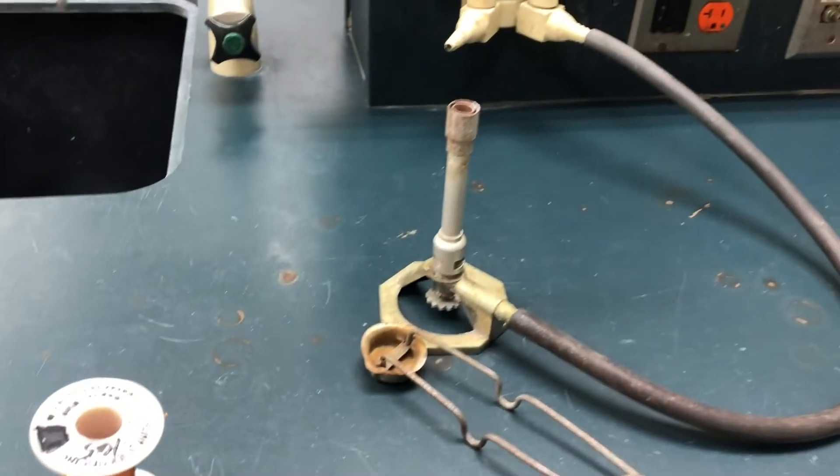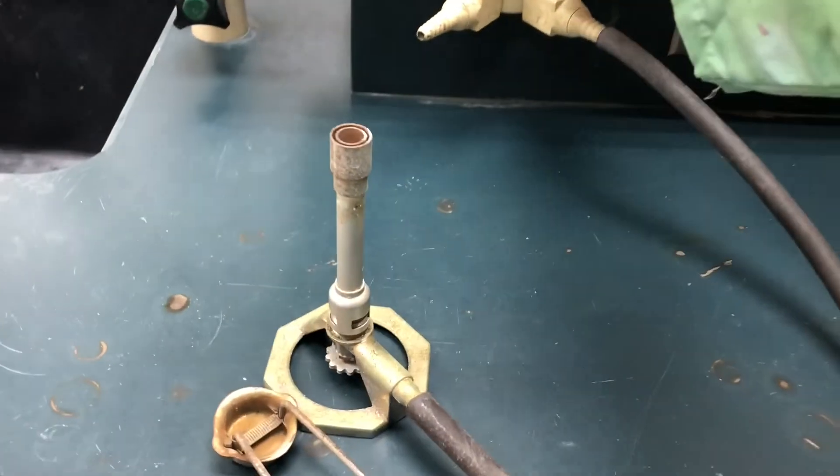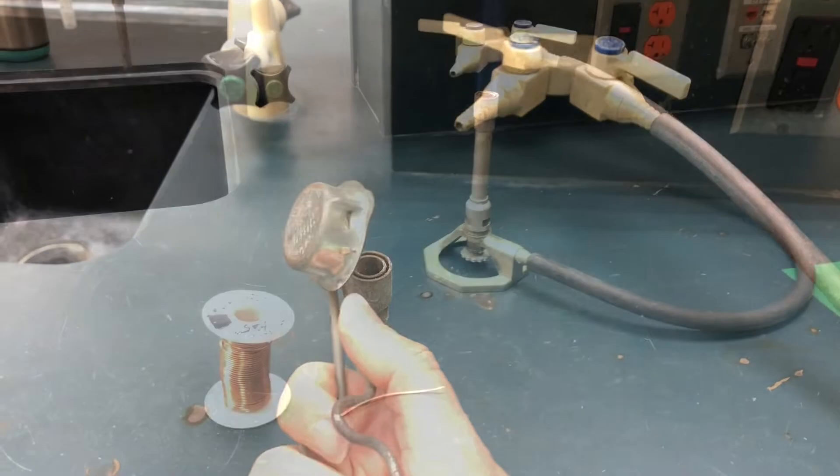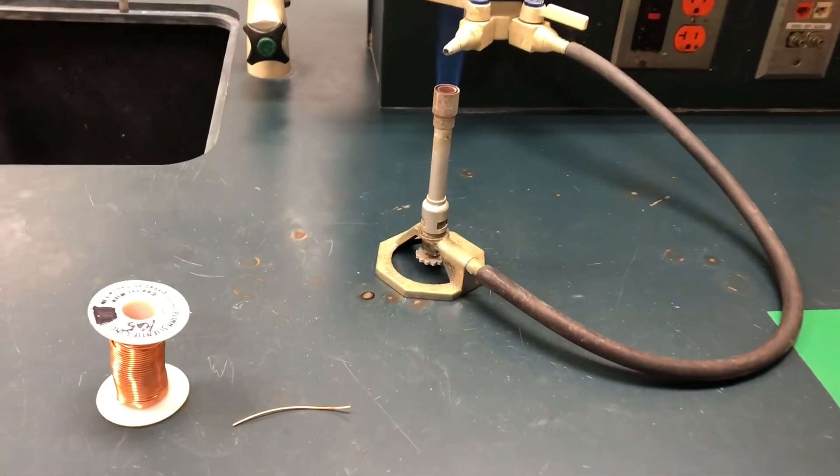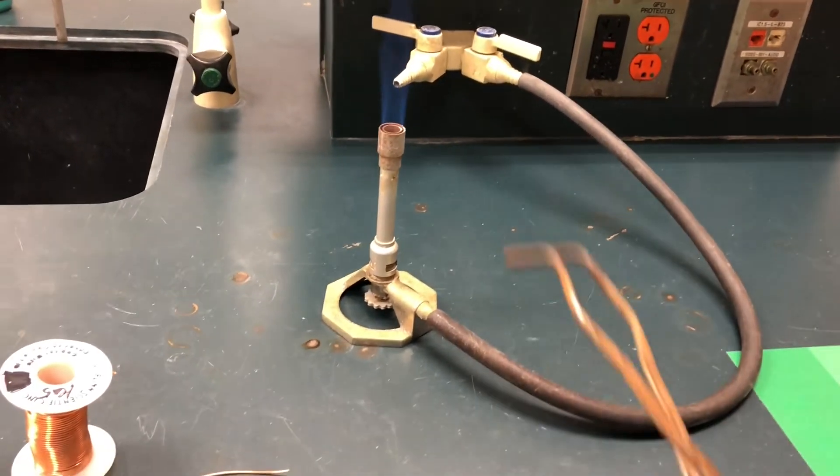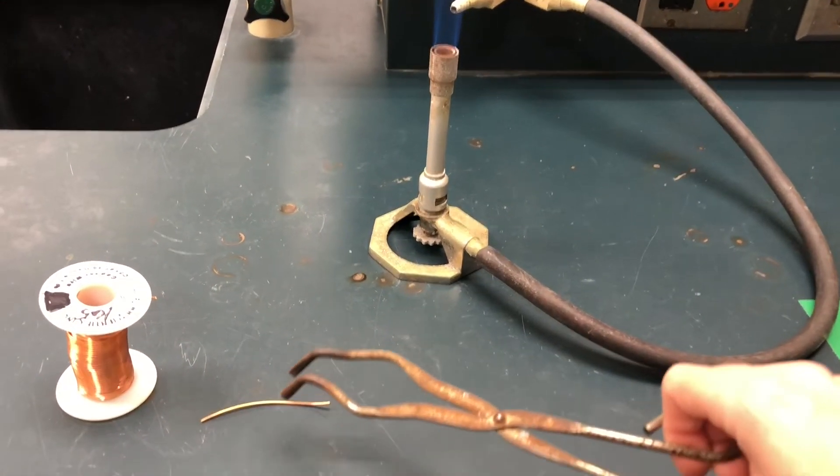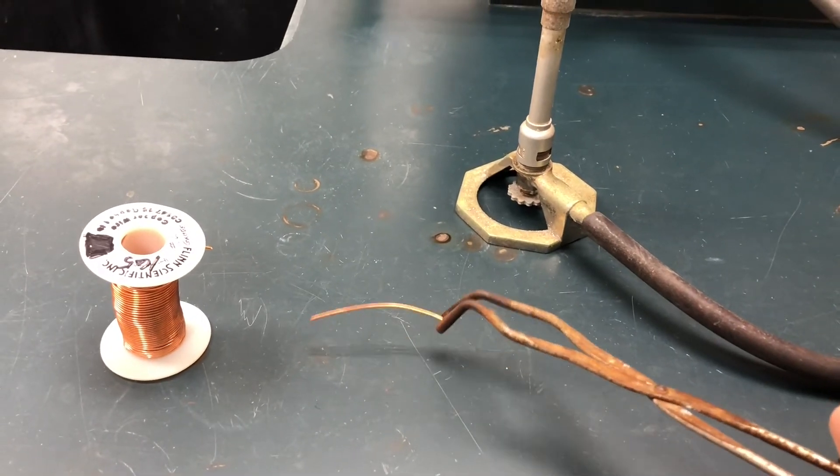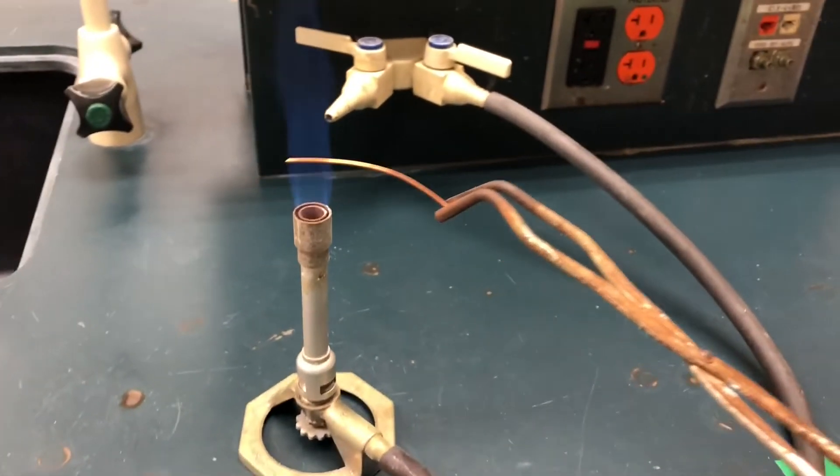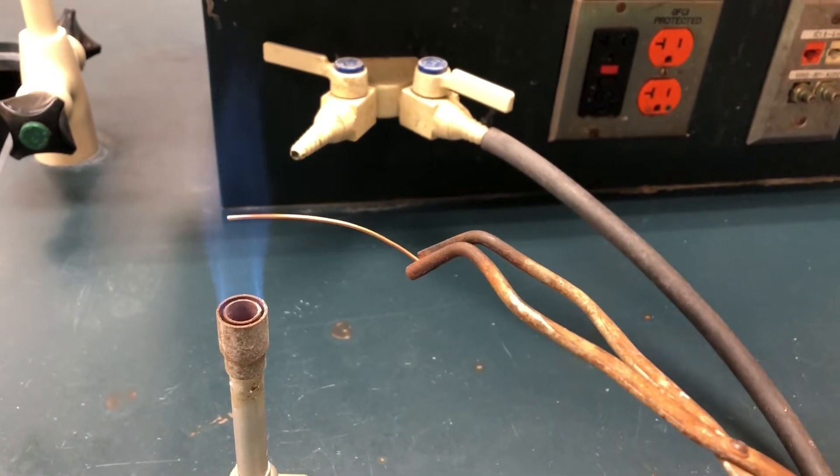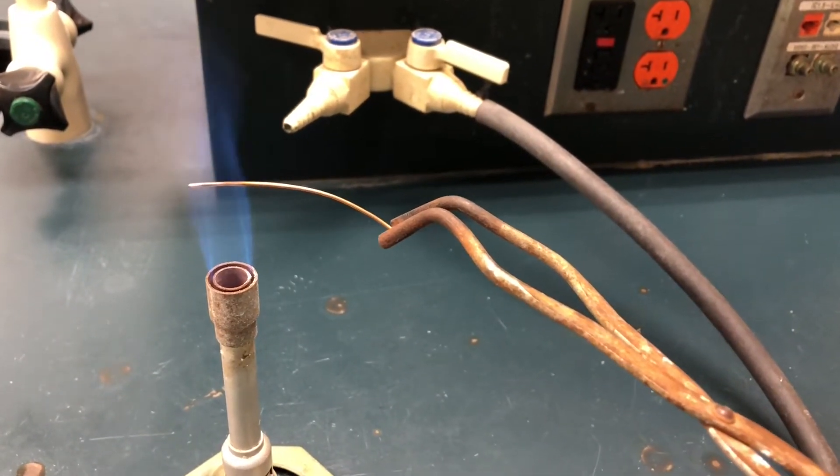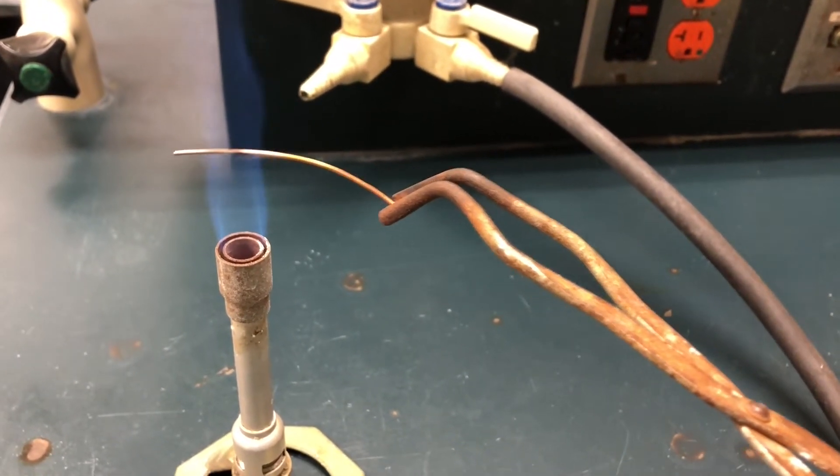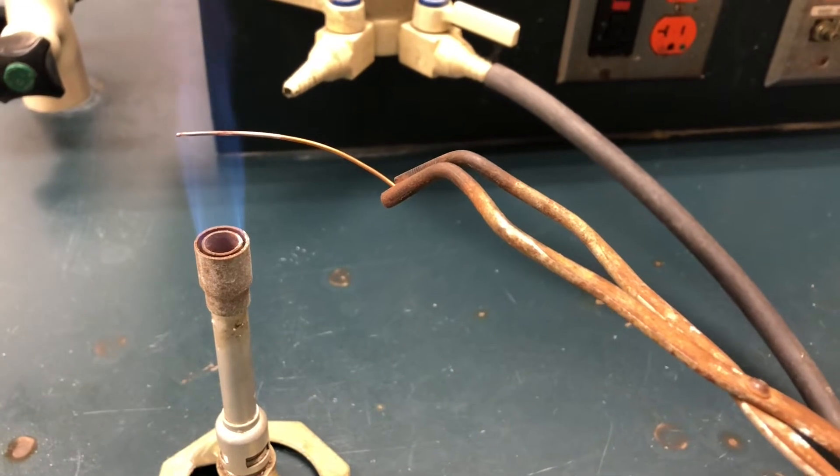Next I'm going to light my Bunsen burner. I'm going to take my copper wire and put it inside the flame of the Bunsen burner. Using crucible tongs I'm going to pick up that shiny copper wire. I'm going to place it inside the flame and now you can start to see immediately that there are some changes happening to this copper wire. I'll heat it up for about a couple minutes here.